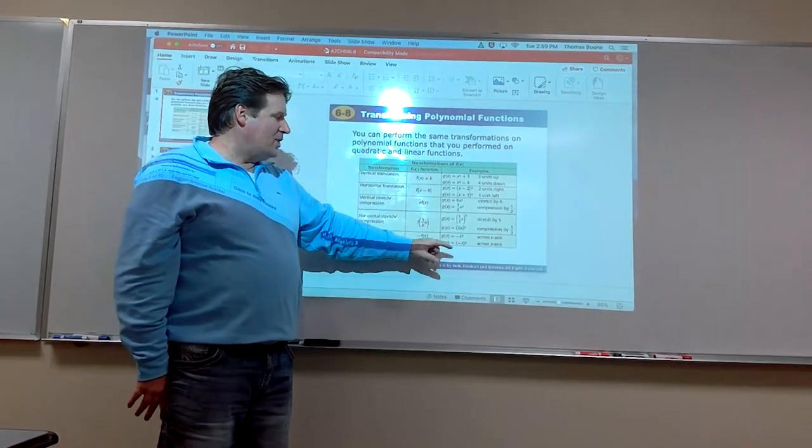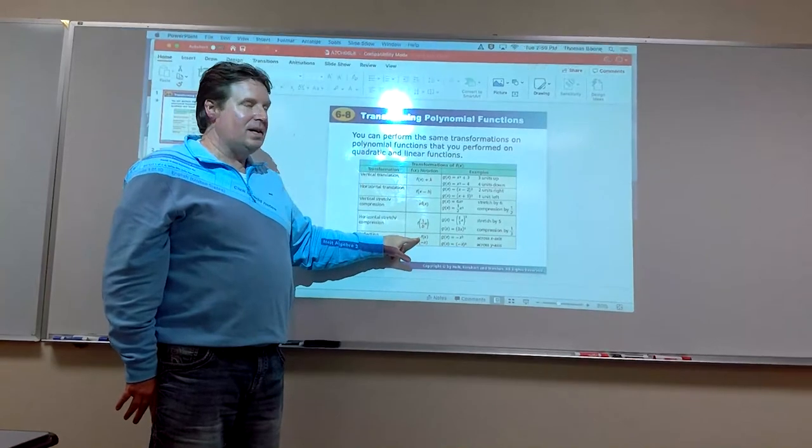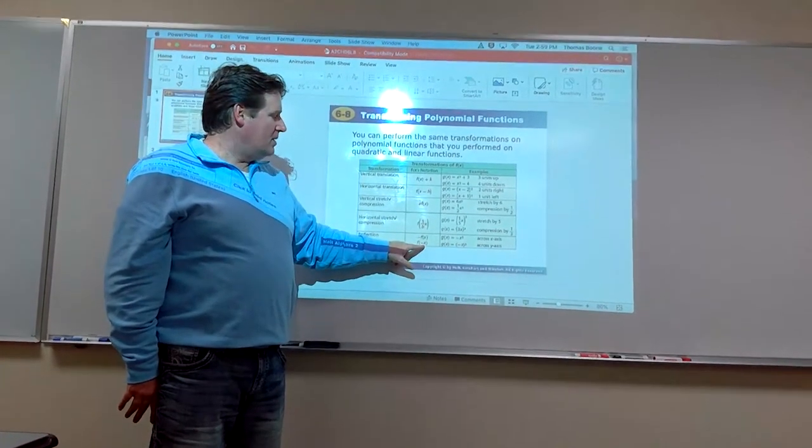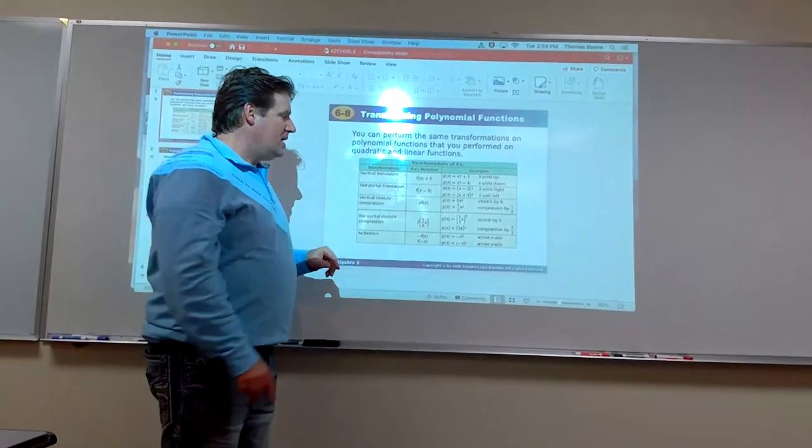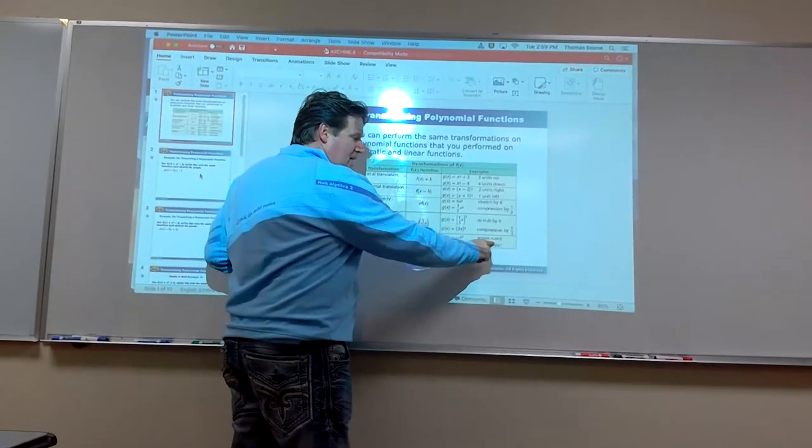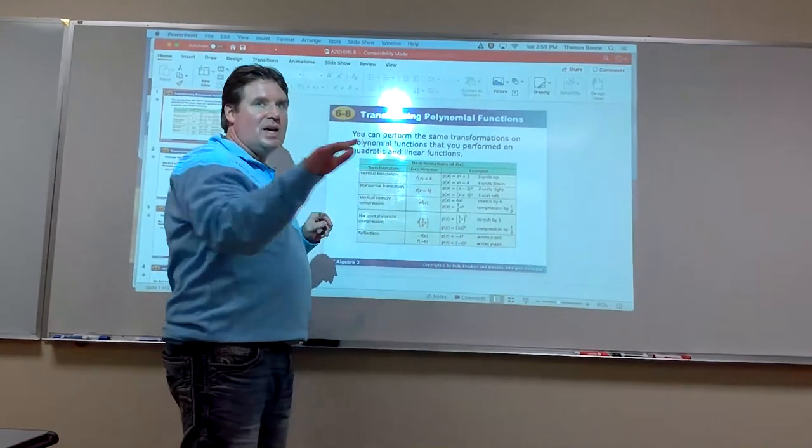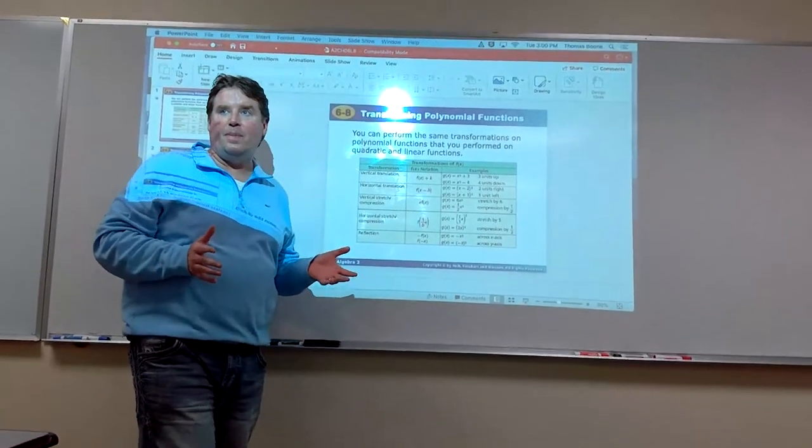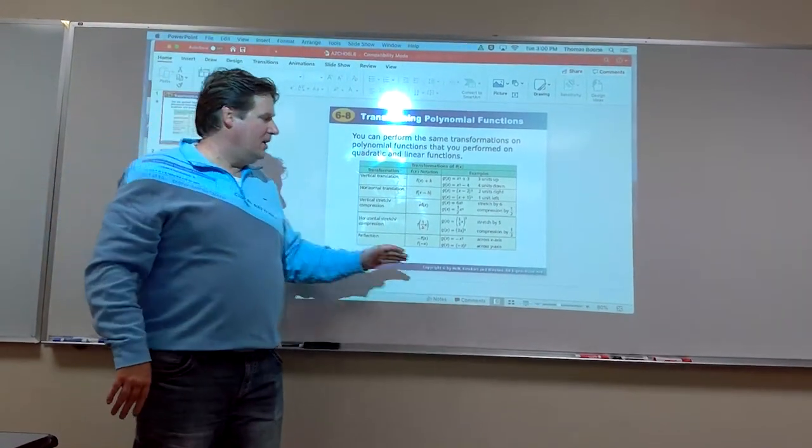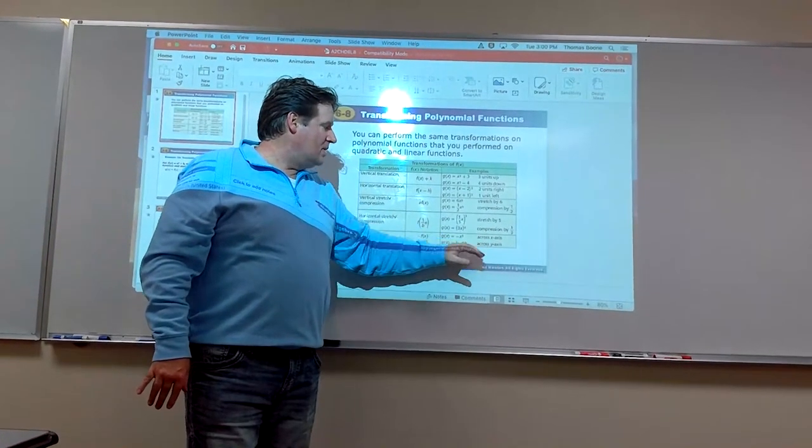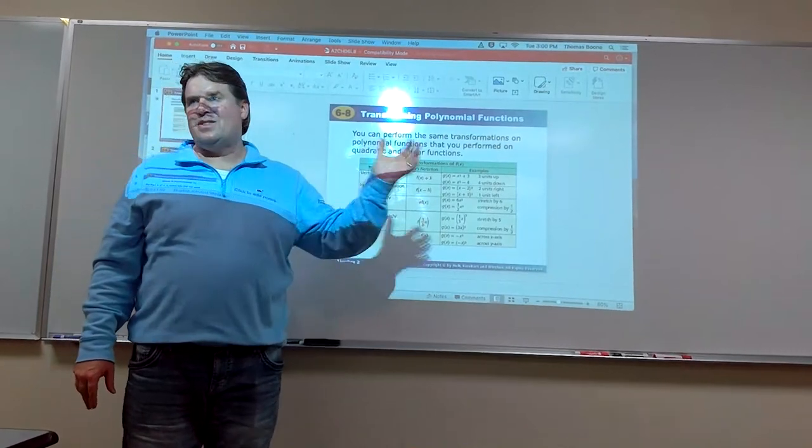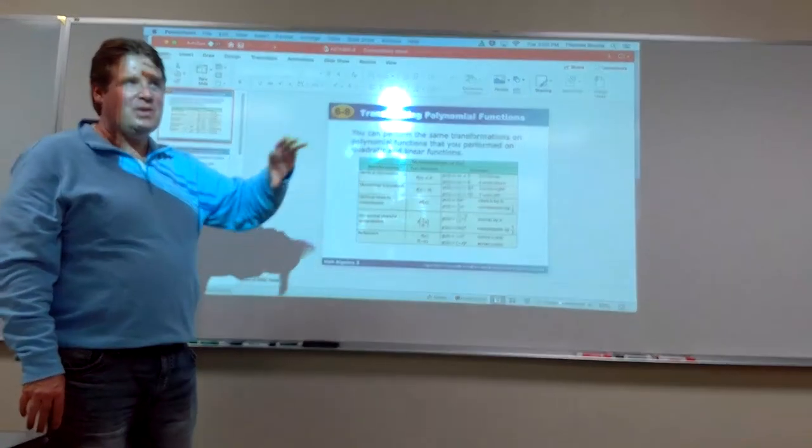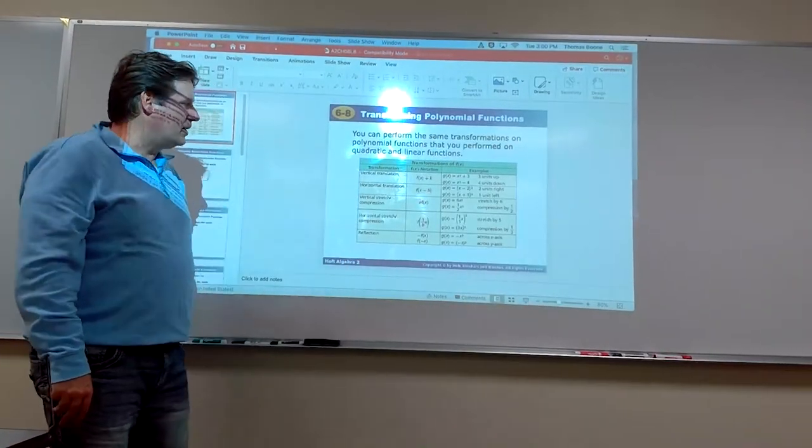We have reflections across the x-axis if we put the negative out front, and across the y-axis if we put it inside. If you reflect across the x-axis, you change the sign of every term in the polynomial. If it's the y-axis, you only change the odd-degree terms - the x-term, x to the third, x to the fifth - everything else stays the same.